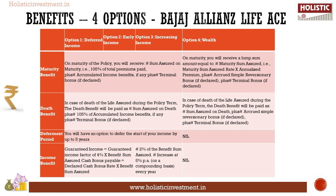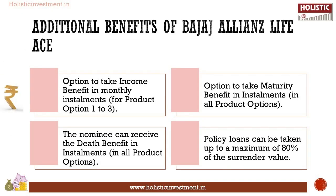You will have an option to defer the start of your income by up to five years under plan options one, two, and three. For plan option four, there is no deferment period. Regarding income benefit: for plan options one and two, guaranteed income equals the guaranteed income factor of 4% multiplied by the benefit sum assured; cash bonus payable equals the declared cash bonus rate multiplied by the benefit sum assured. For plan option three, income starts at 2% of benefit sum assured and increases at 5% per annum on a compounding basis. There is no income benefit under plan option four.